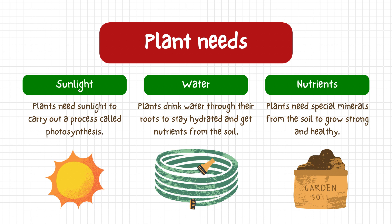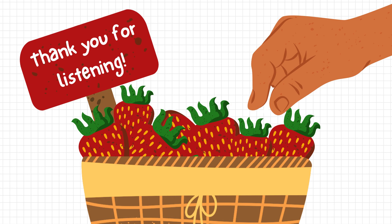What does a plant need? Plants need sunlight, water, and nutrients. Plants need sunlight to carry out photosynthesis. Plants drink water through their roots to stay hydrated and get nutrients from the soil. Plants need special minerals from the soil to grow strong and healthy.